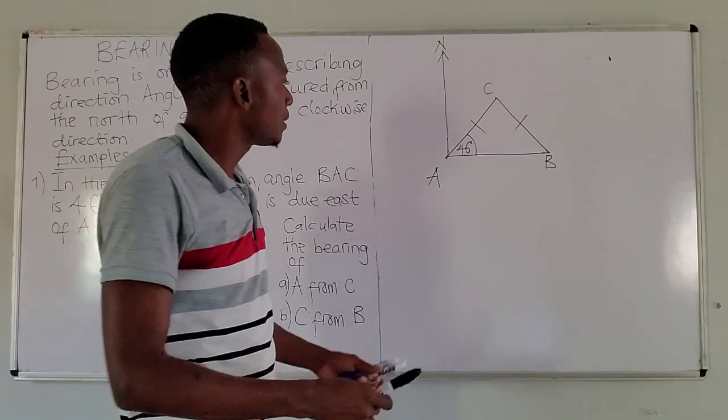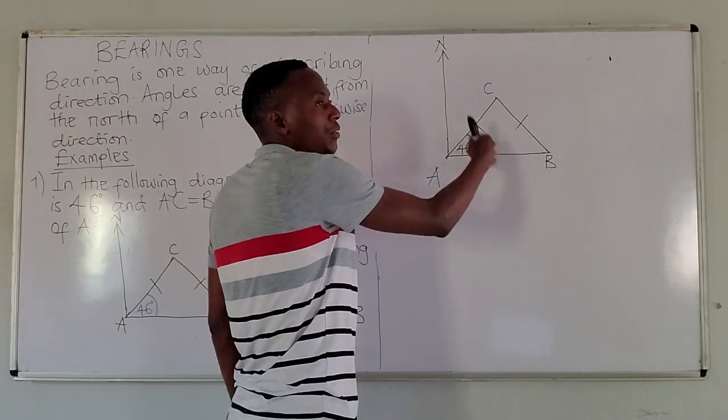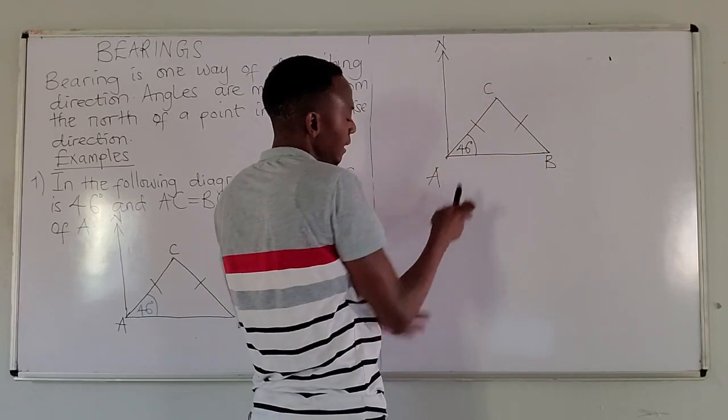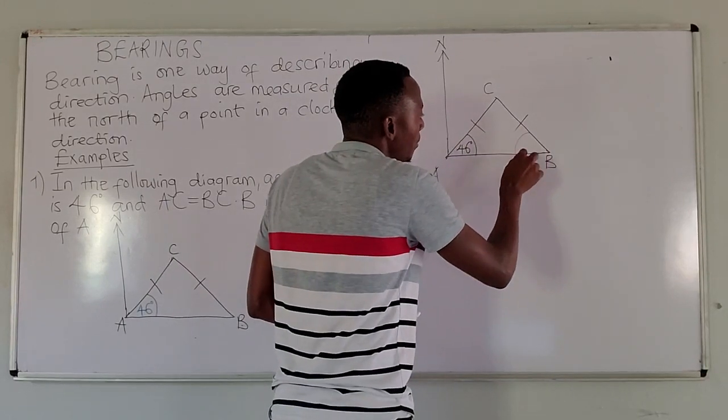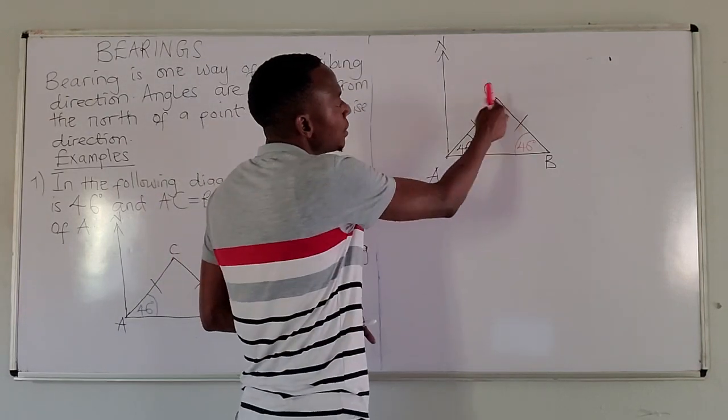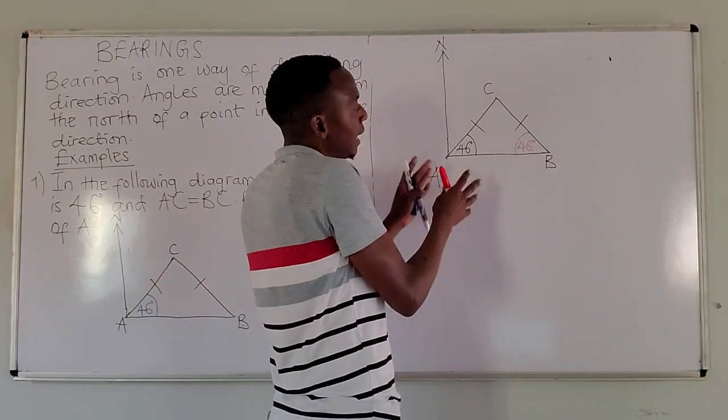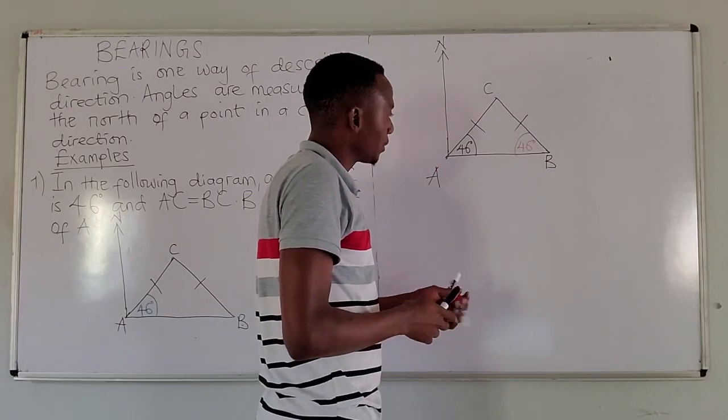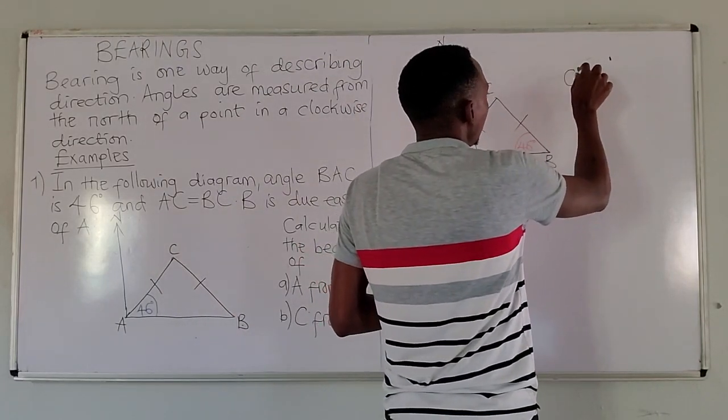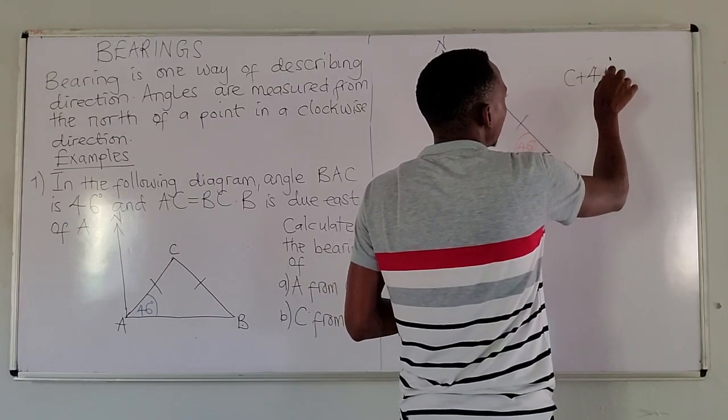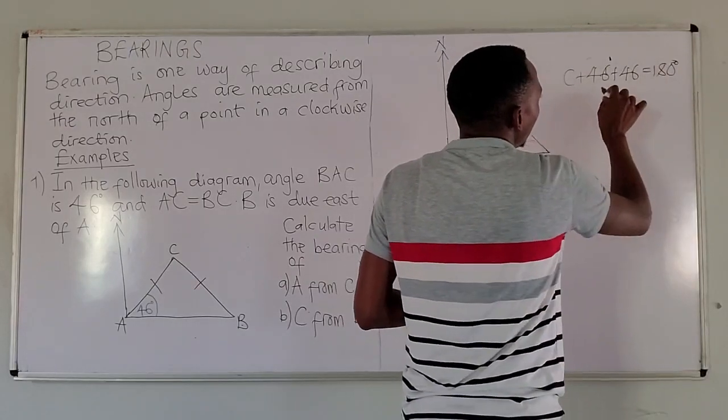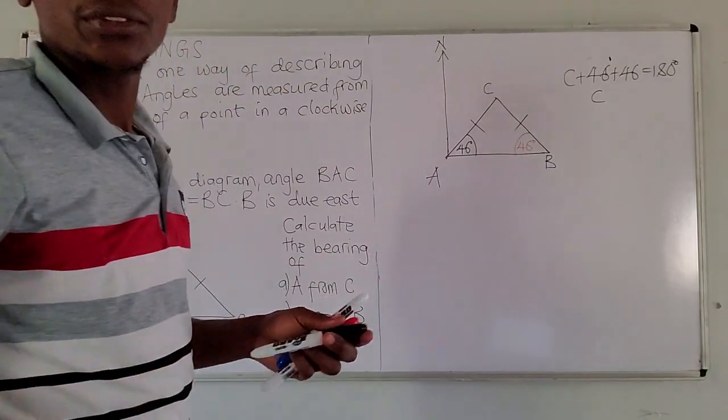When you look at this, this is an isosceles triangle. The base angles are the same. If we have 46 here, it means even here we are going to have 46 degrees. Angles in a triangle add up to 180 degrees, so we find angle C as C plus 46 plus 46 equals 180 degrees.